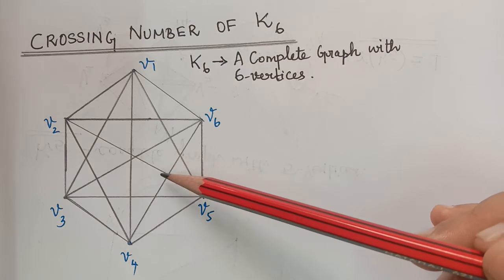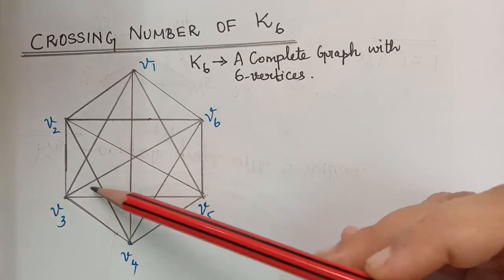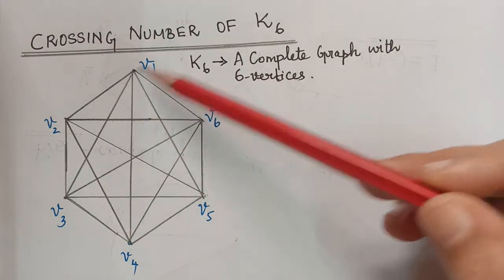We shall find the crossing number of this graph. Now if we see here, there are too many crossings for this graph. So we shall try to reduce it by drawing this graph into a plane.